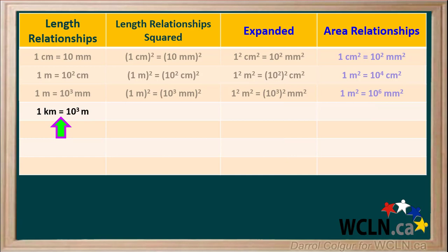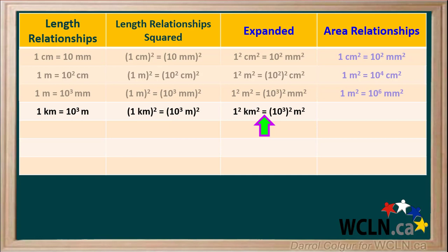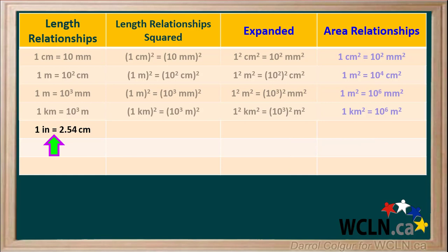We also know that one kilometer is equal to one thousand, or ten to the third, meters. Squaring both sides gives us one kilometer all squared equals ten to the third meters all squared. Expanding so that numbers and units are squared separately, one squared equals one and ten to the power of three squared equals ten to the power of six. So an area of one kilometer squared is the same as ten to the sixth, or one million, meters squared.